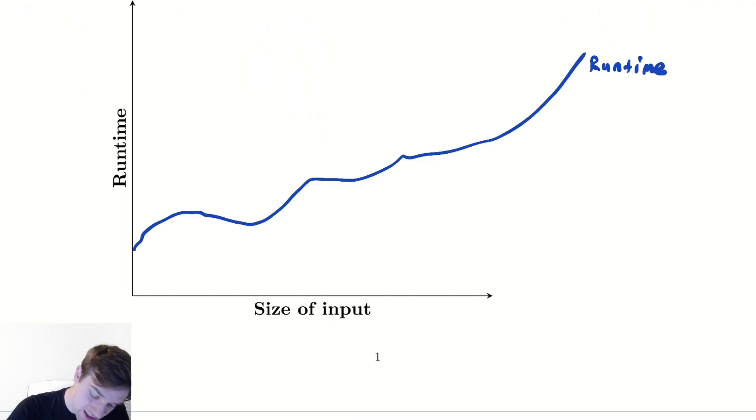What we might want to study instead is some much more convenient looking function, some function like let's say this nice smooth red curve. And our goal is that that red curve and the blue curve in some sense grow at the same rate. What do we mean by the same rate? Well, we're going to have to muddle through a bit of mathematics to get there.